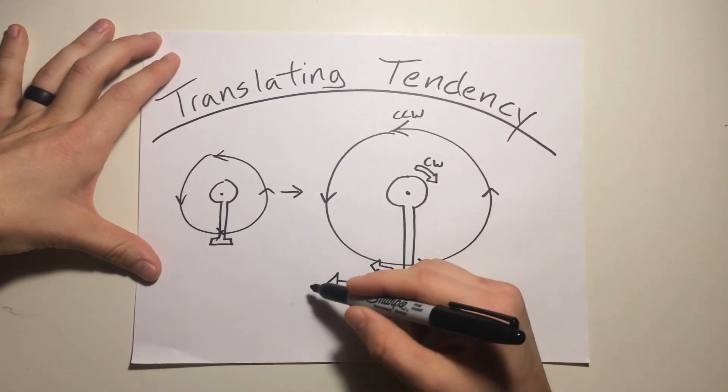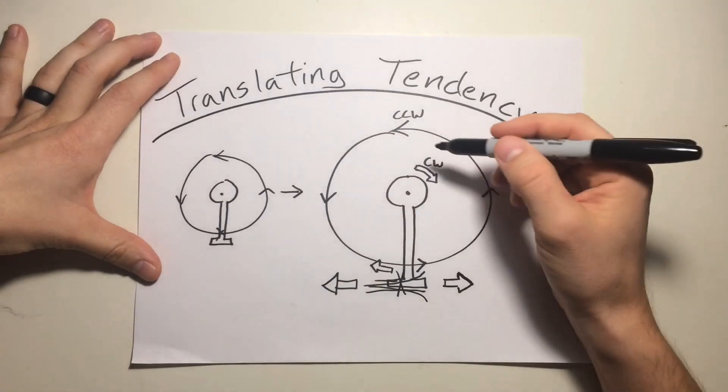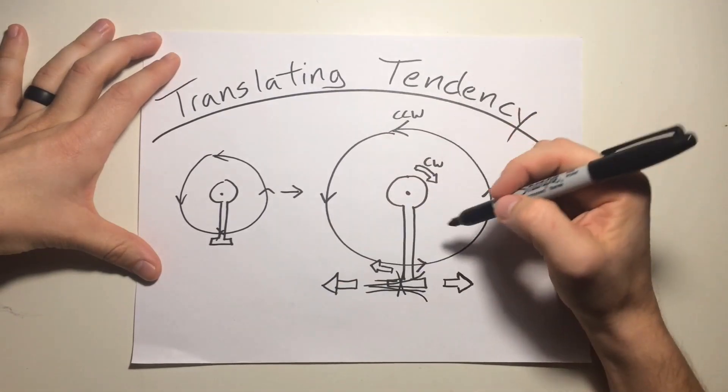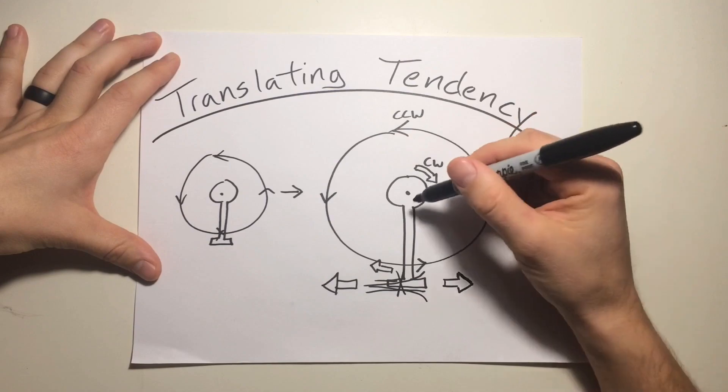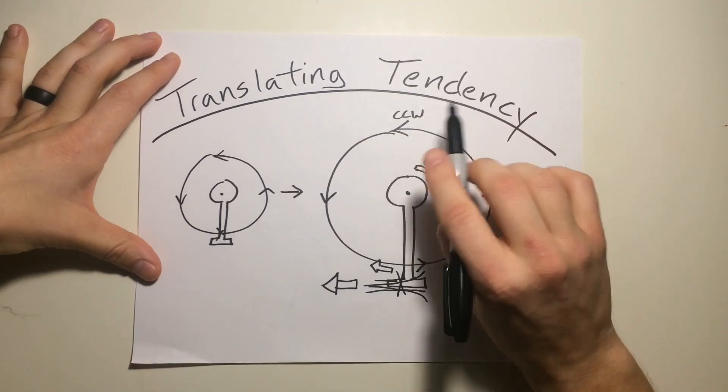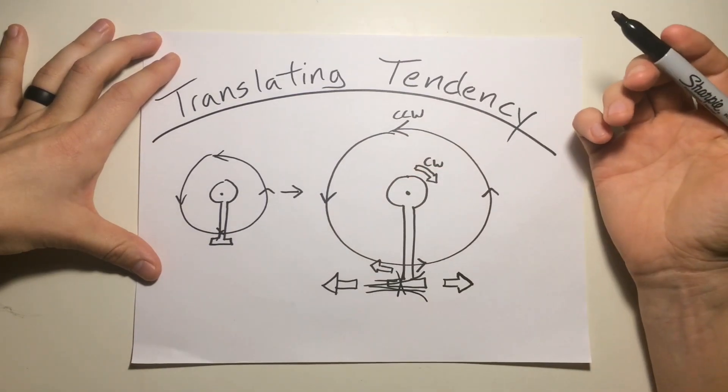So now, with this tail rotor pushing against the torque effect of this main rotor, now we have some kind of heading control, and now we have authority with our pedals to be able to turn where the helicopter is when we're flying.